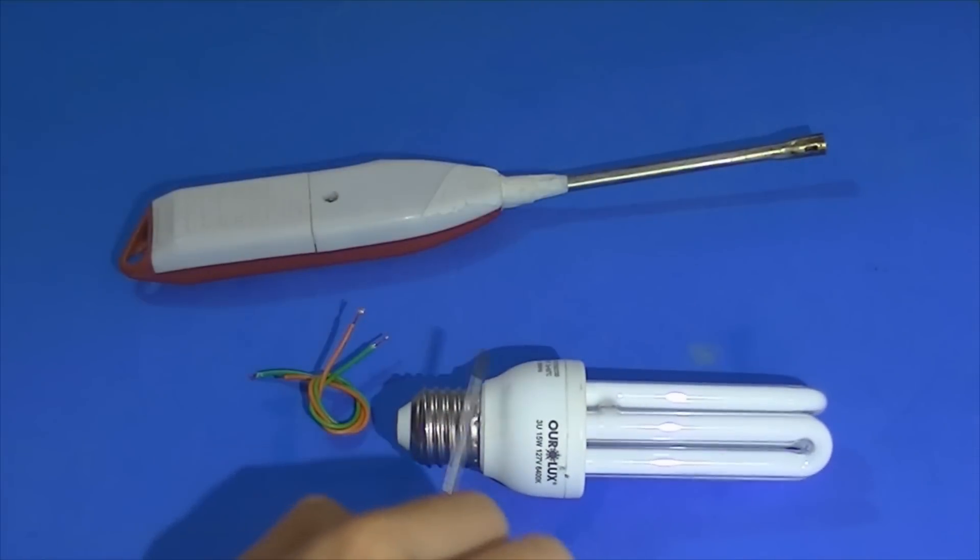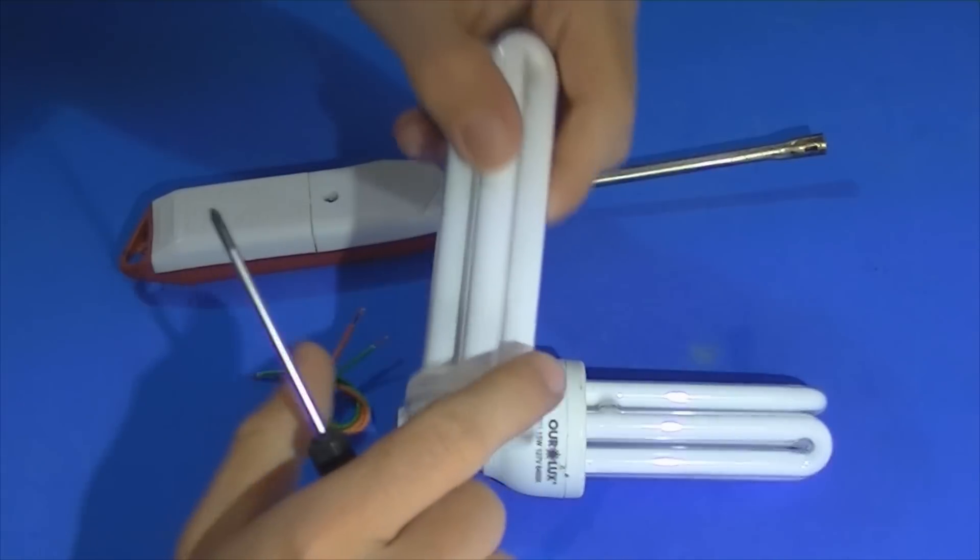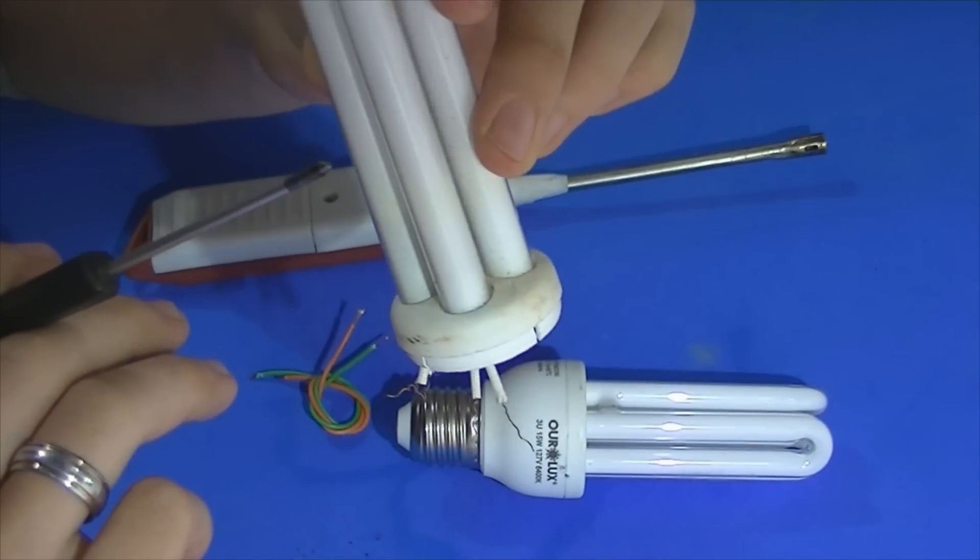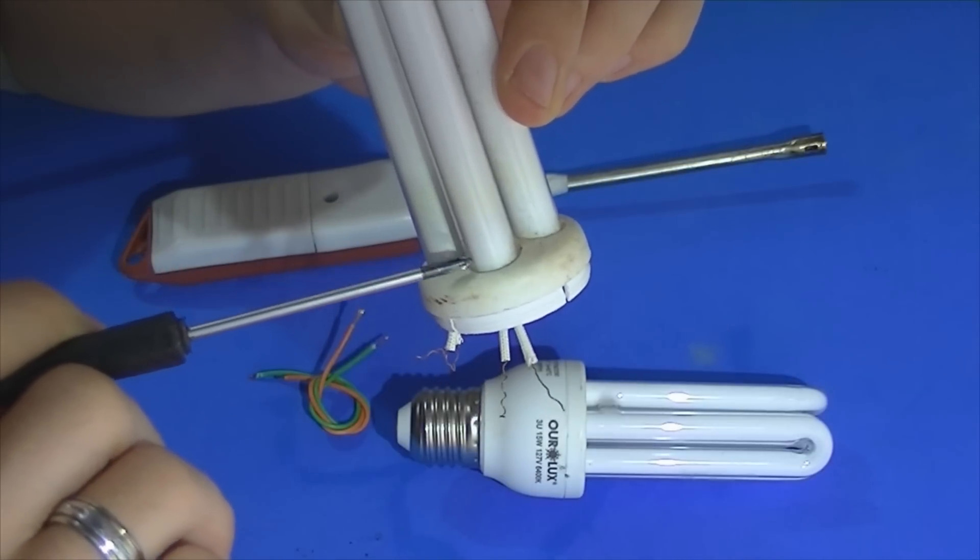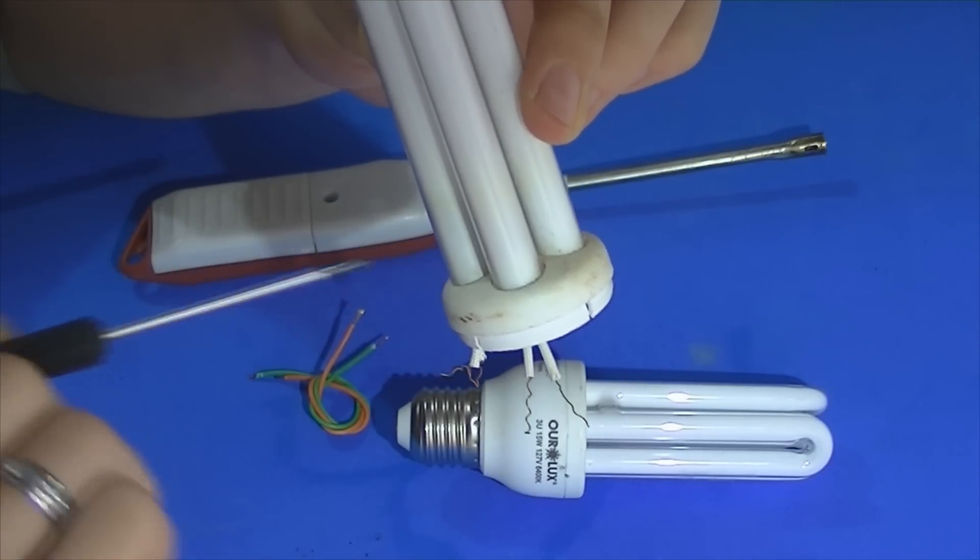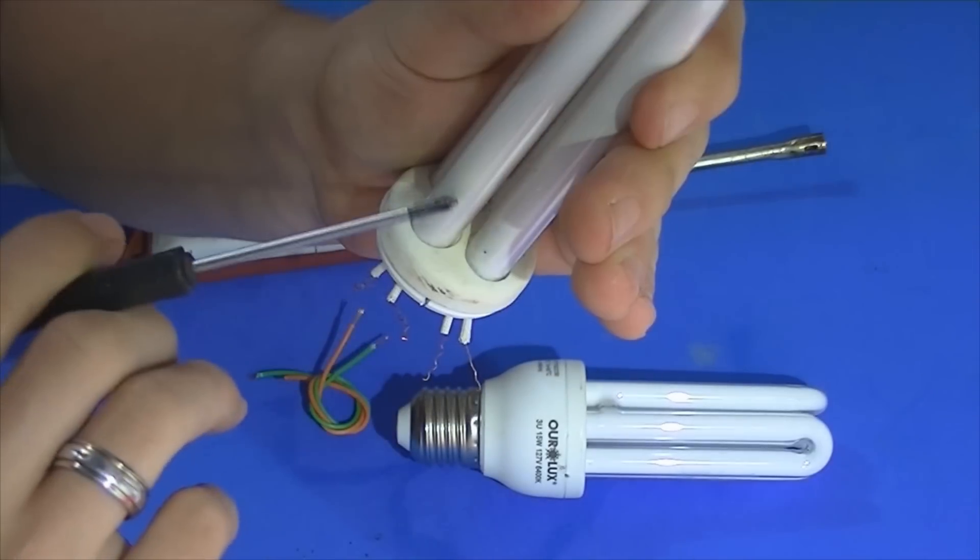Vou pegar uma que está com o filamento queimado, essa parte aqui do fluorescente queimado para vocês observarem. Não sei se dá para pegar bem aí no vídeo, mas dá para você observar que essa parte aqui de baixo, essa aqui também, ela está um pouco mais escura. Olha bem aqui. Está vendo?